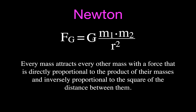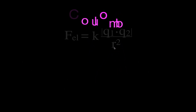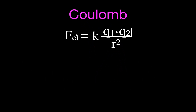This G is the gravitational constant, which we'll talk about in a moment. The force of gravity equals the gravitational constant times the mass of one object times the mass of the other, divided by the square of the distance between them. Now keep that picture in your head, and when you look at Coulomb's law, it looks very similar.